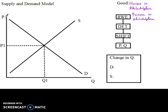So let's take a look at our graph. Here's going to be the price of housing specifically in Philadelphia, and this is going to be the quantity of housing in Philadelphia. Of course you have an upward sloping supply curve, a downward sloping demand curve, some equilibrium price for housing in Philadelphia, and some equilibrium quantity of housing in Philadelphia.